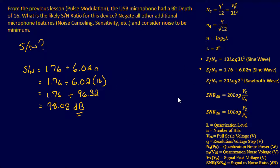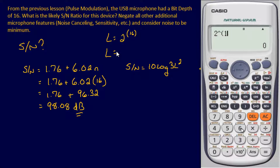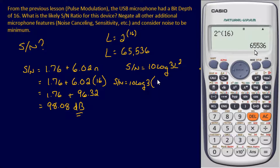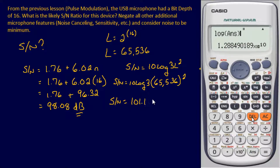Let's verify with the other equation: signal-to-noise ratio equals 10 log of three times the number of levels squared. First, find the number of levels — L equals 2 to the N, so L equals 2 to the 16, which gives us 65,536 levels. Then signal-to-noise ratio equals 10 log of 3 times 65,536 squared, which gives us 101.1 decibels. These equations came from two separate references, but the outputs are similar: 98 dB versus 101 dB — pretty close.